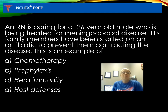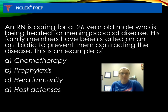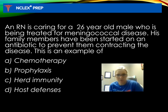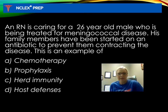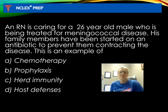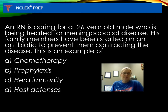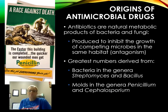Practice question: An RN is caring for a 26-year-old male being treated for meningococcal disease. His family members have been started on an antibiotic to prevent them from contracting the disease. Is this an example of A) chemotherapy, B) prophylaxis, C) herd immunity, or D) host defenses? The most correct answer is B, prophylaxis. While antibiotic use does technically qualify as chemotherapy, the most specific and correct answer here is prophylaxis, because the goal is prevention.